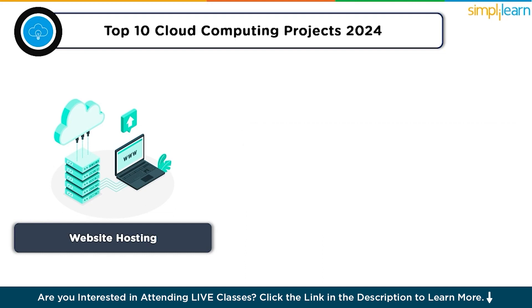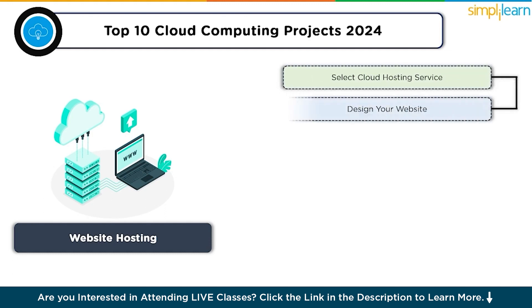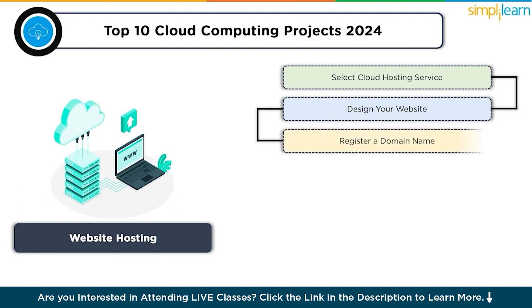The first step is to select a cloud hosting platform like Amazon Web Services, Azure or Google Cloud. Next, design your website — create the content and design using HTML, CSS and JavaScript for static websites or web frameworks for dynamic ones. Then register a domain name by purchasing one from a domain registrar such as GoDaddy or Namecheap.